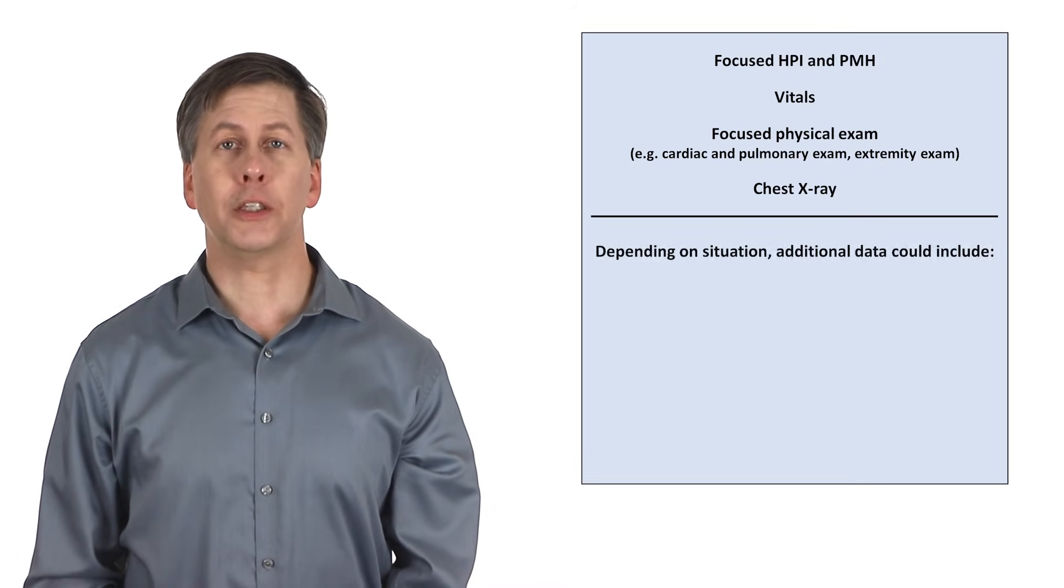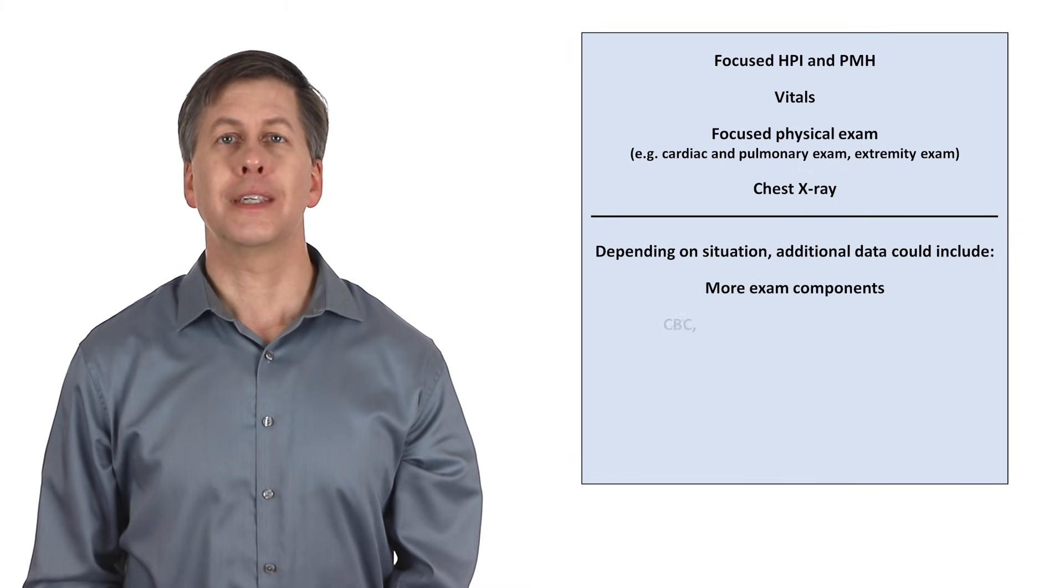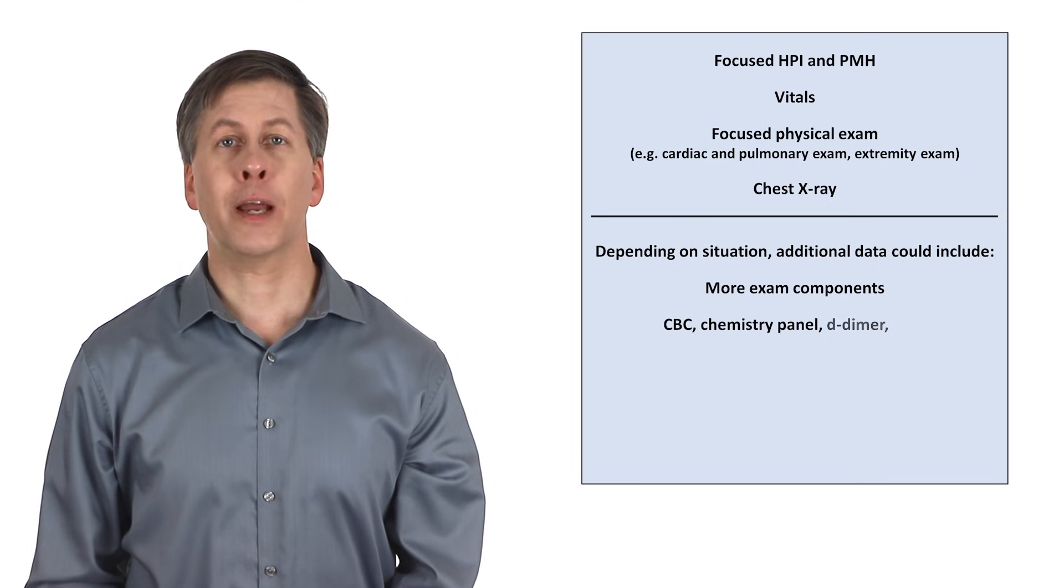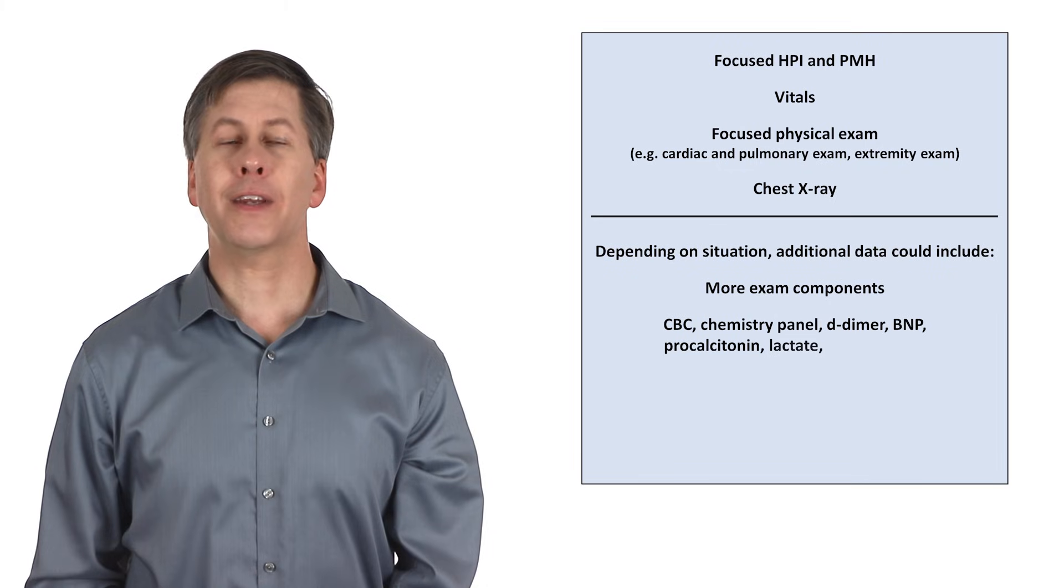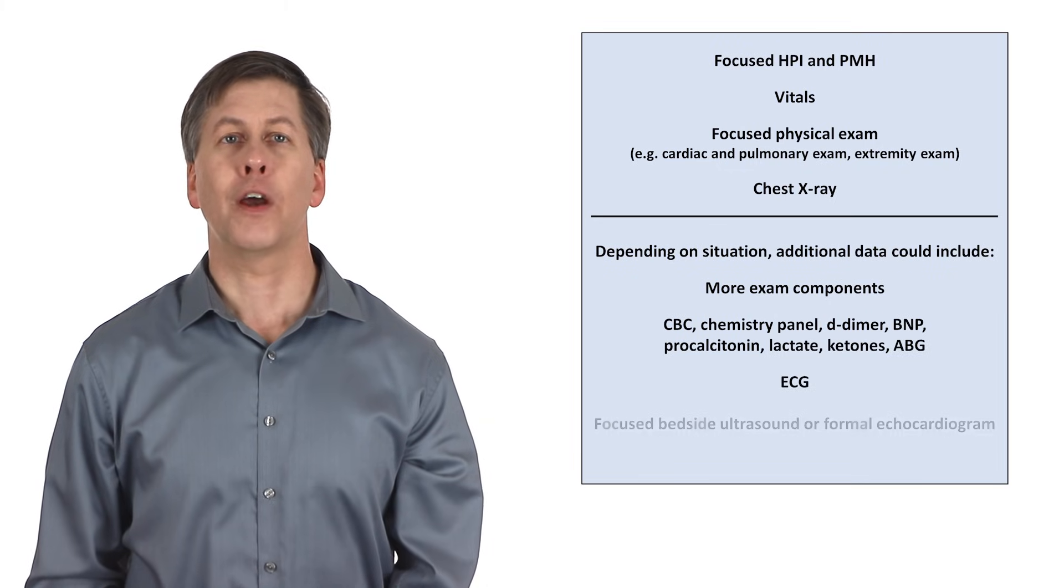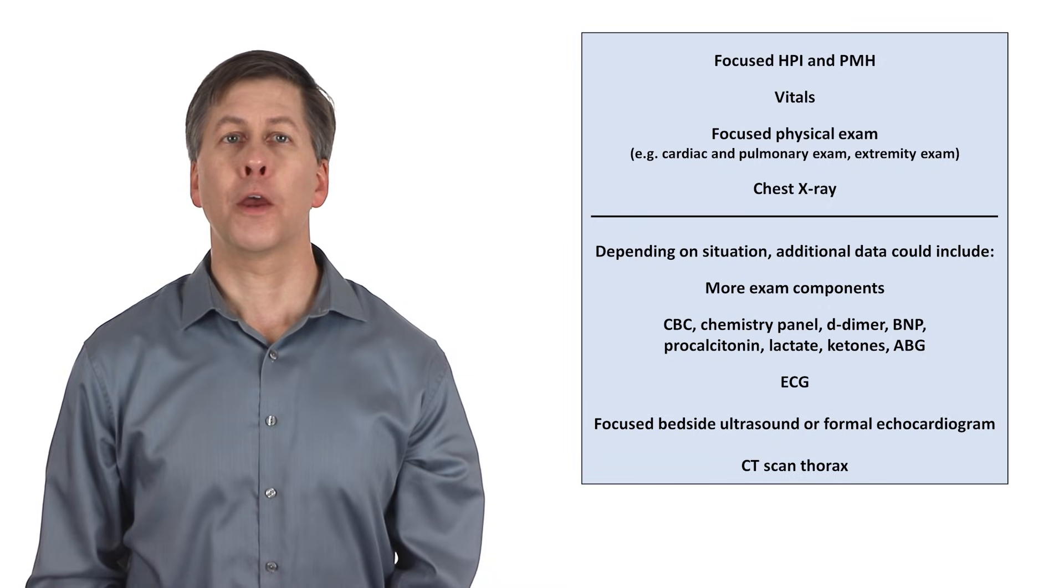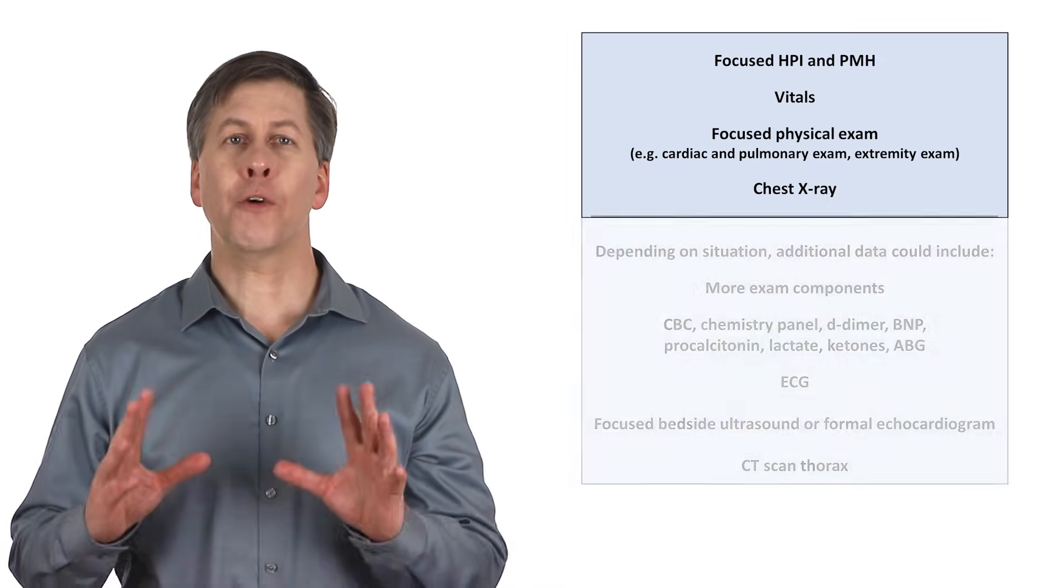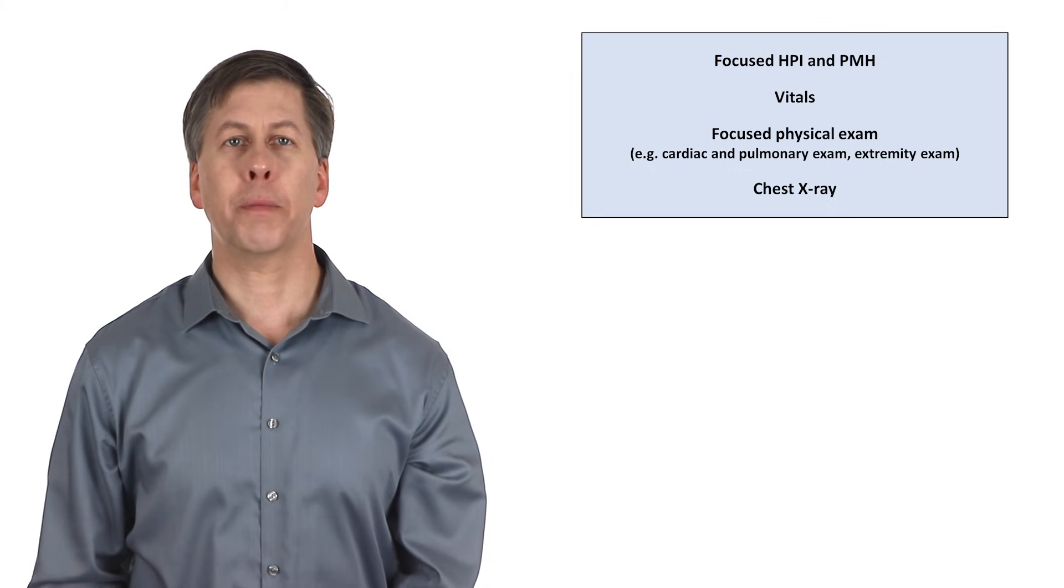Depending on the situation, additional data could include more exam components, CBC, chemistry panel, D-dimer, BNP, procalcitonin, serum lactate and ketones, an ABG, ECG, a focused bedside ultrasound or a formal echocardiogram, and or a CT scan of the chest. But, starting off with just the focused history, vitals, focused physical exam, and chest x-ray, one of several combinations of findings will be apparent.